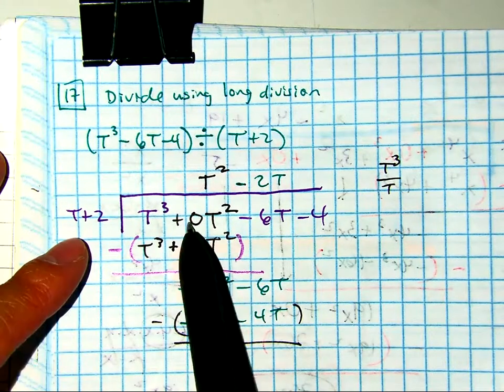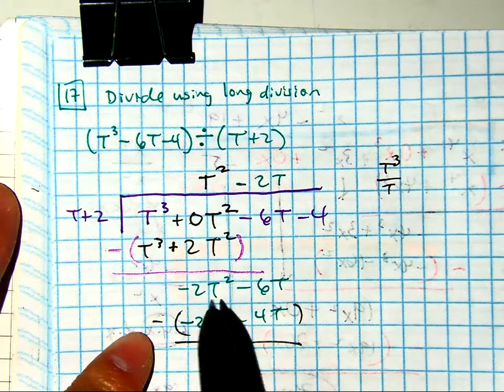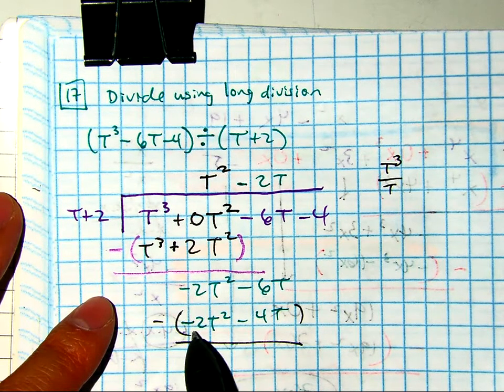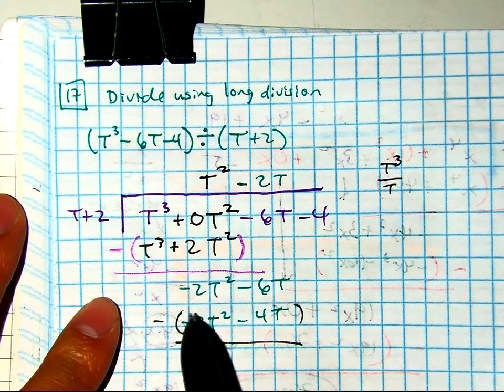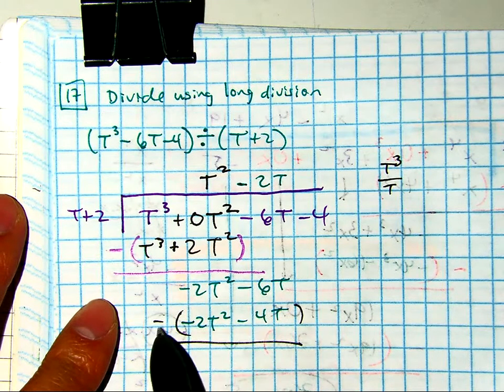Remember that's zero minus two. That gives you the negative two. If you guys are struggling with the integers, just put it in your calculator. Negative two minus a negative is a positive, so it's negative two plus two is zero, so that equals zero. Negative six minus a negative four.